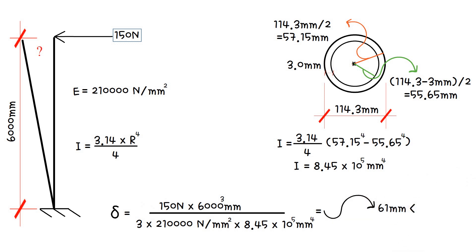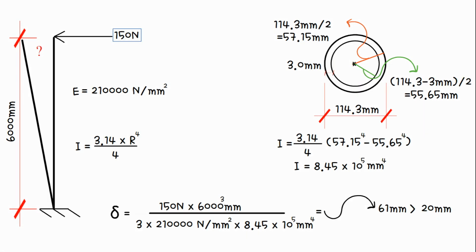This should be less than the lateral deflection limit, height over 300. 6,000 millimeters divided by 300 equals 20 millimeters. As 61 millimeters is greater than 20, we should replace the flagpole with a larger section.